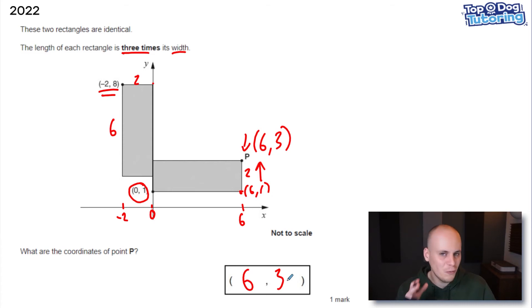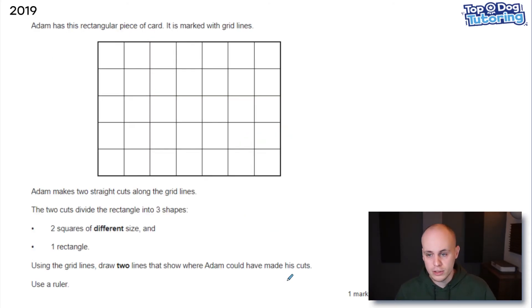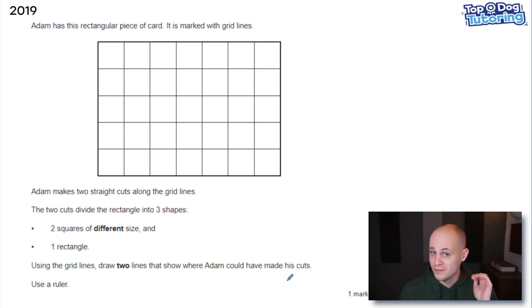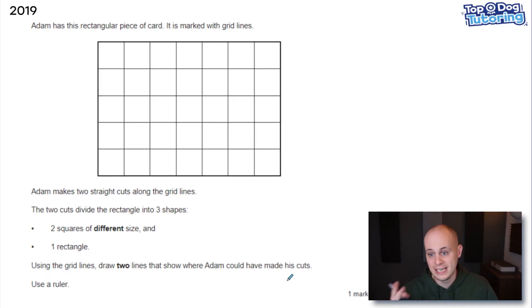Let's move on to number two — a really weird question. I've never seen anything like it before or since. It came up in the 2019 paper and was quite bizarre, very new for the children taking it that year. The challenge: divide this rectangle into two squares of different sizes and one rectangle, using only two straight lines. Pretty tricky — have a go, maybe draw it out on square paper yourself.